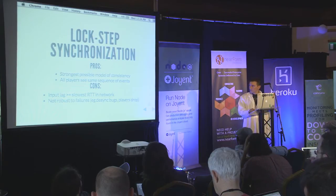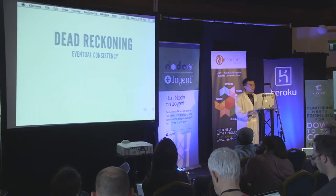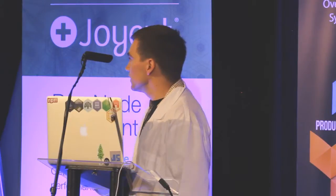Lockstep synchronization is the naive way to do it. If you have a fast network connection you can throw money at the problem, but it's not good enough most of the time. So instead, what most games use is something more akin to eventual consistency — dead reckoning. The idea: get inputs from players, apply them immediately, then extrapolate to predict what happens in the future. Of course, you get contradicting events, so you do some correction work under the hood.